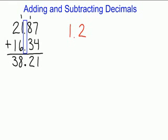For my next example, 1.2, 1 and 2 tenths, plus 5.63. Now I have a different amount. I have a different number of digits.